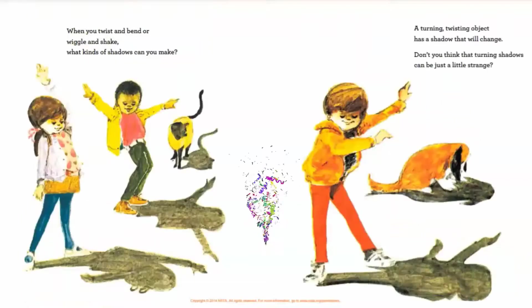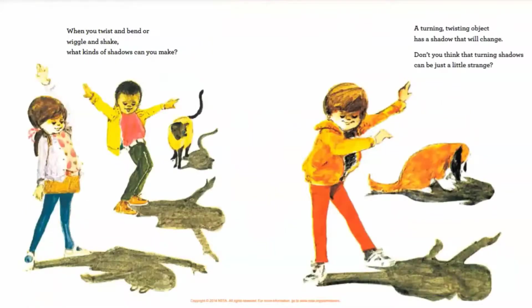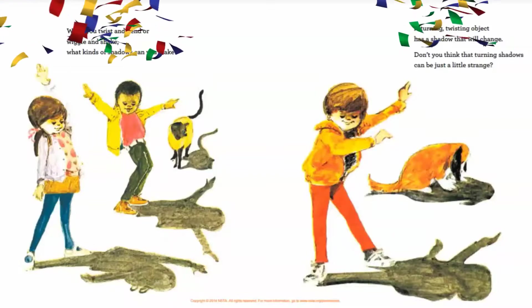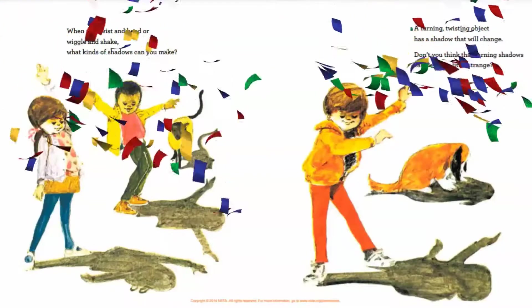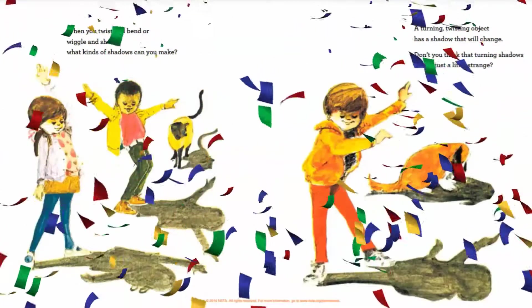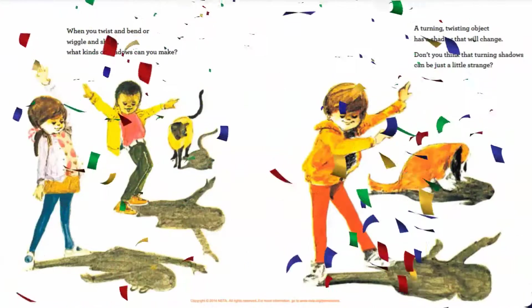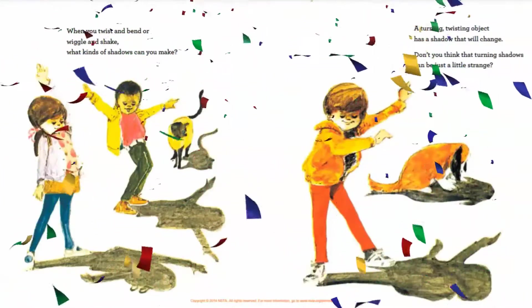When you twist and bend or wiggle and shake, what kinds of shadows can you make? A turning, twisting object has a shadow that will change. Don't you think that turning shadows can be just a little strange?